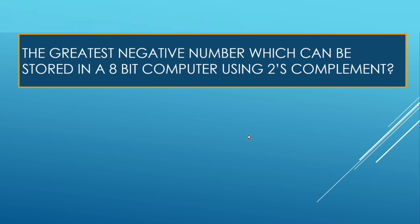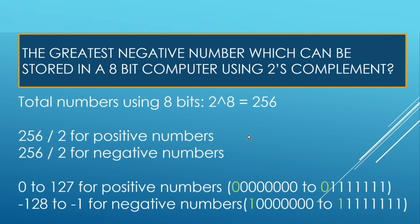The correct answer is minus 128. Let us see how. If we see how many binary numbers we can create from 8 bits, it will be 2 raised to power 8, that means 256 numbers.